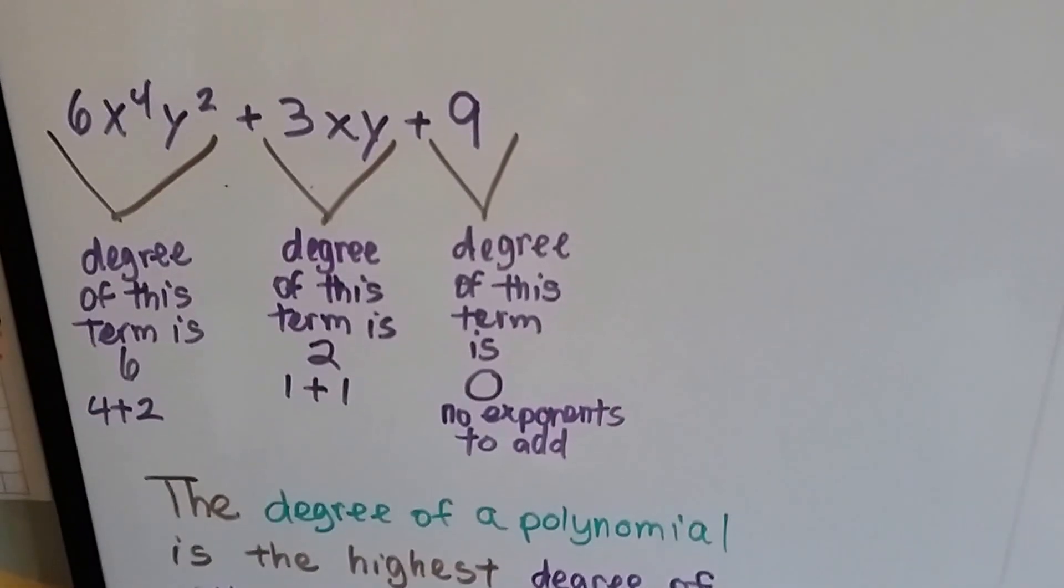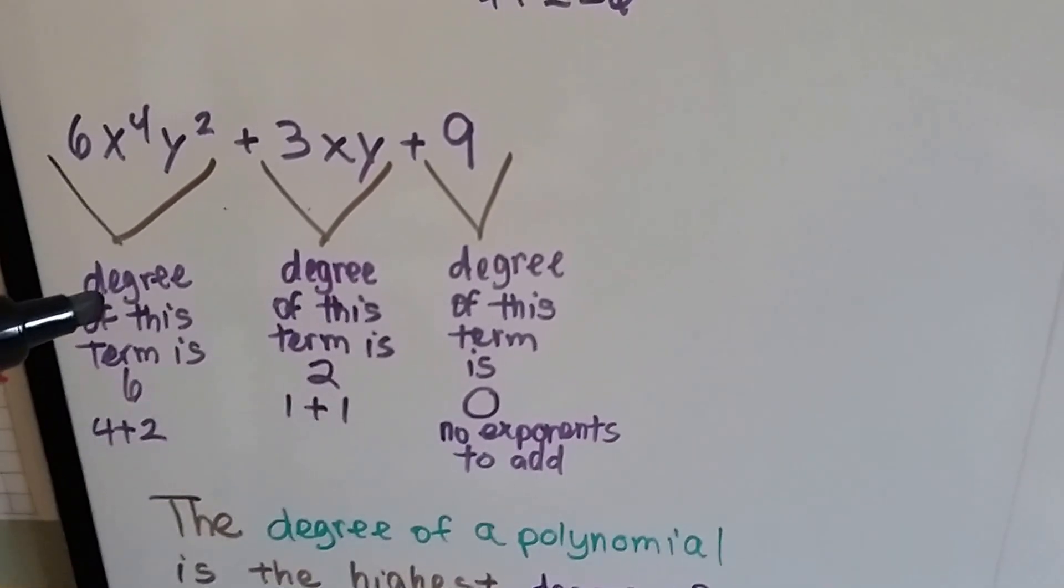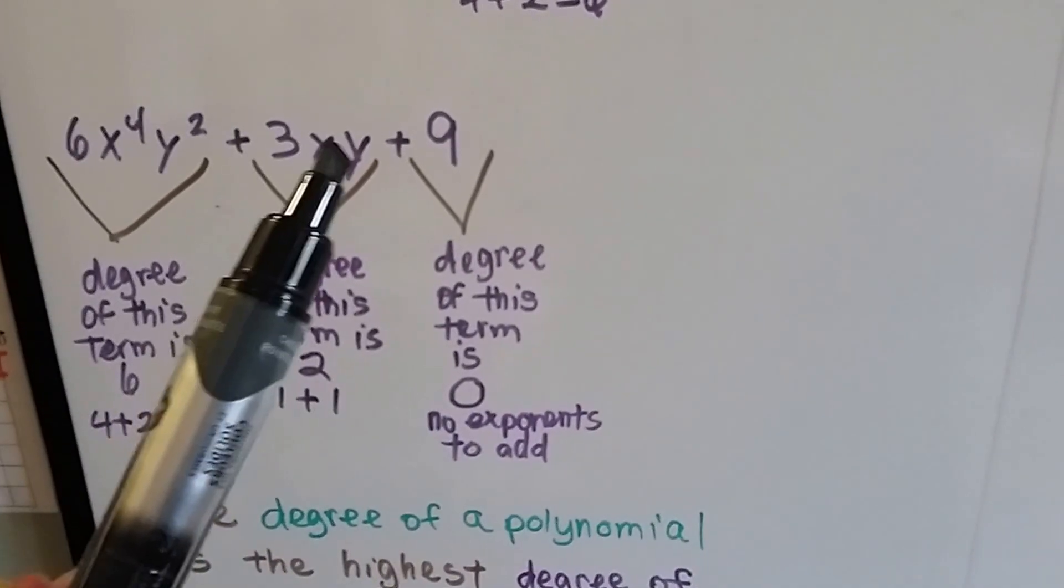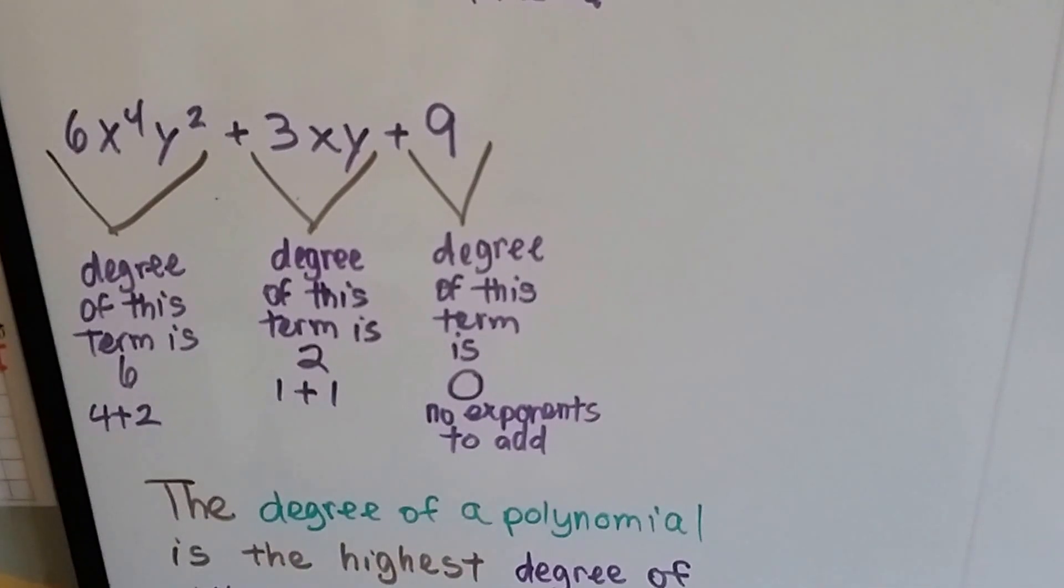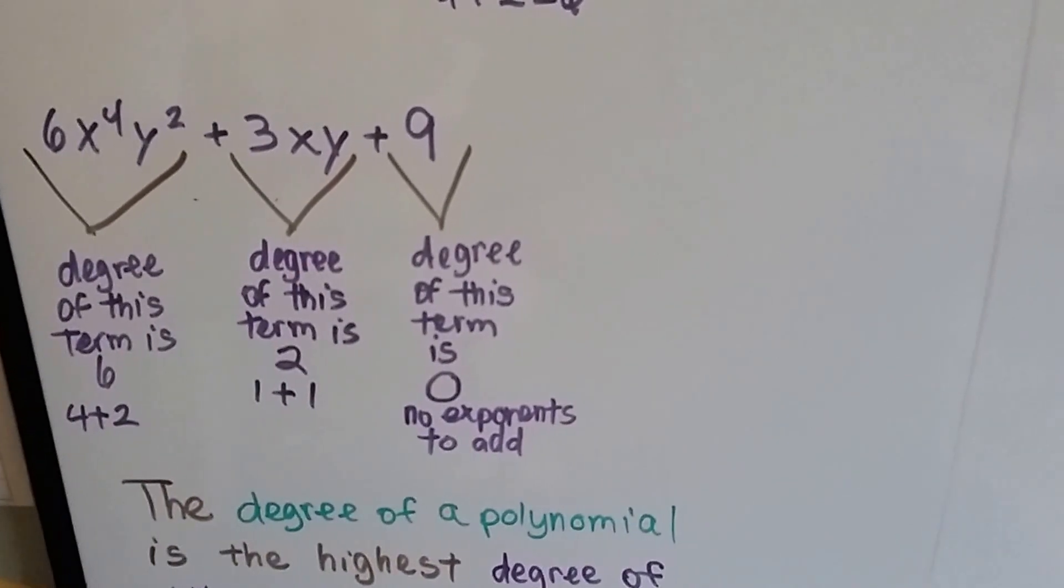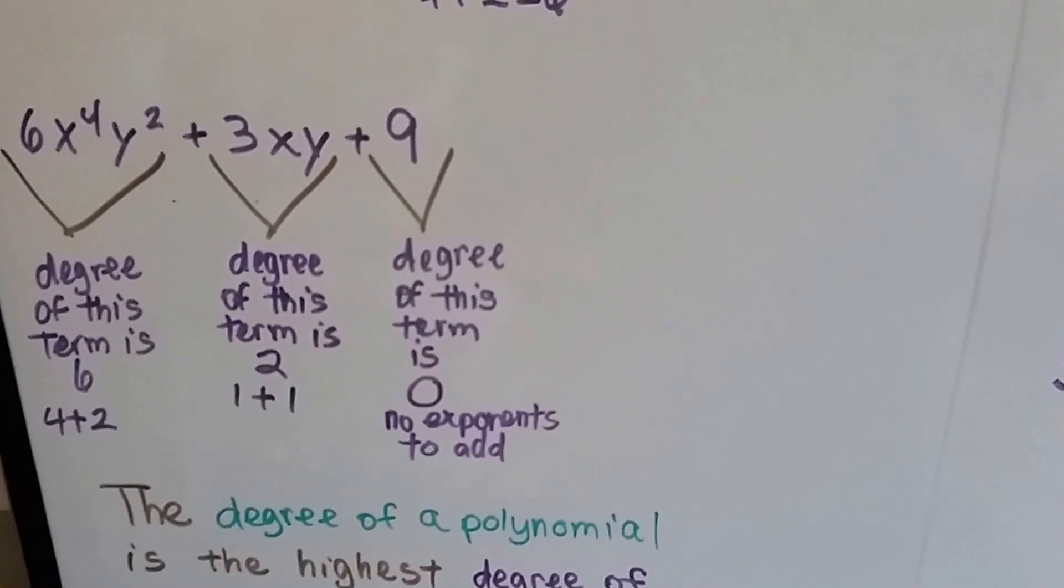We can see in the first term, the degree of that term is 6, that's the 4 plus 2. The degree of this term is a 2, because there's an invisible 1 and an invisible 1 by the x and the y as exponents, so 1 plus 1 is 2. And the 9, well, it doesn't have any exponents, so its degree is 0.